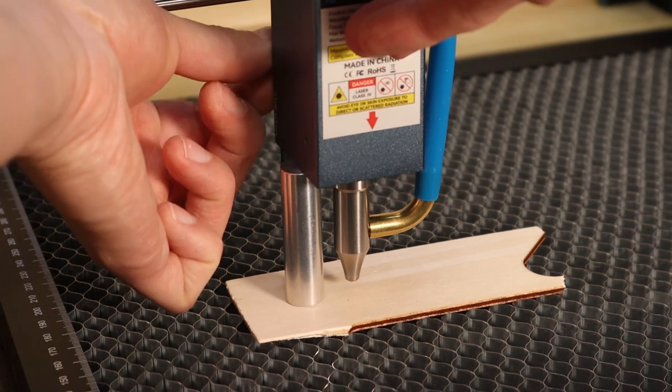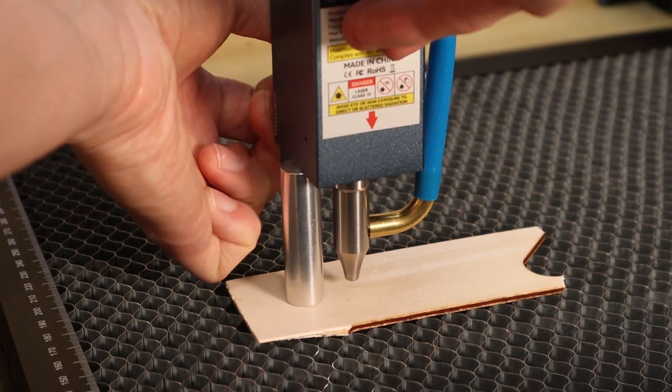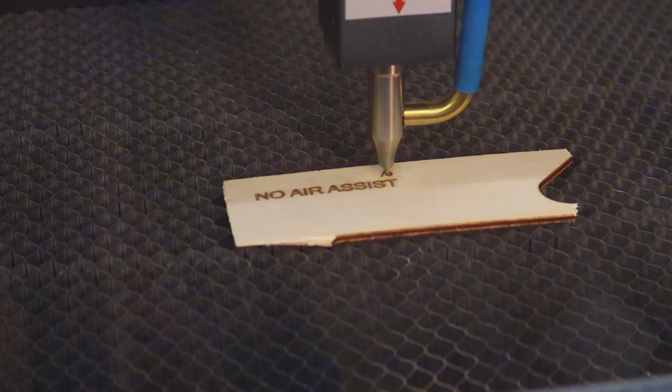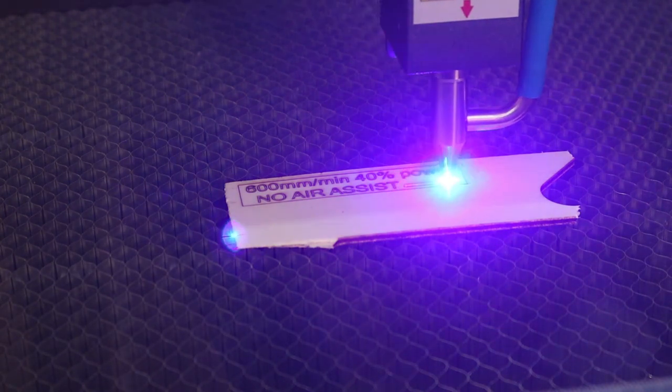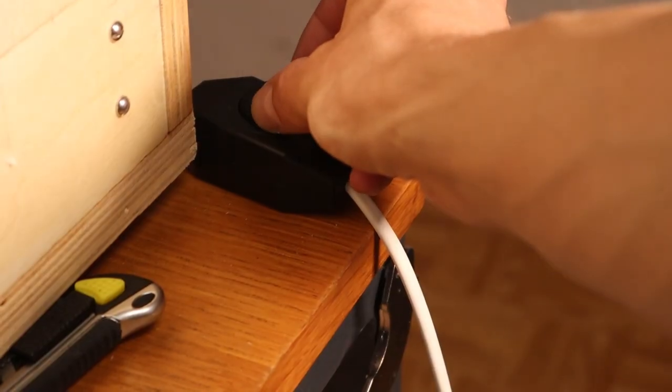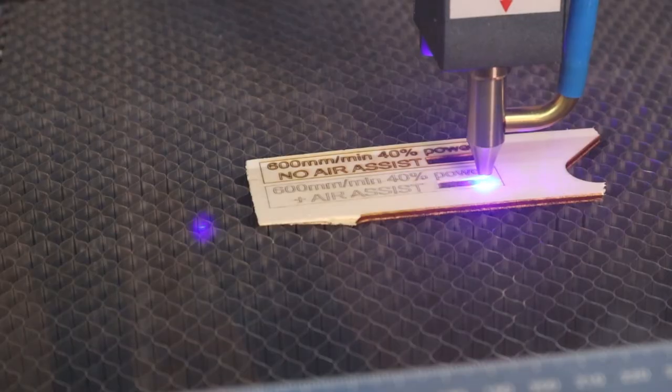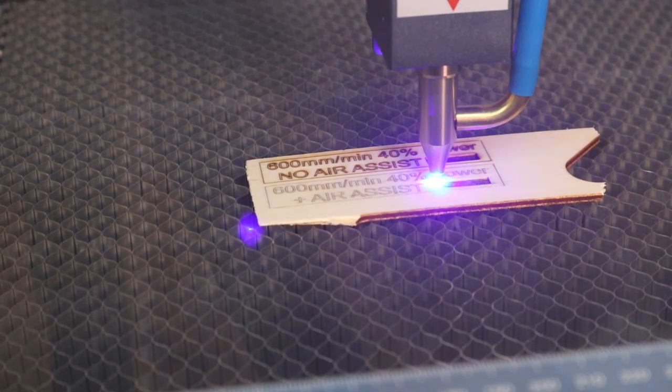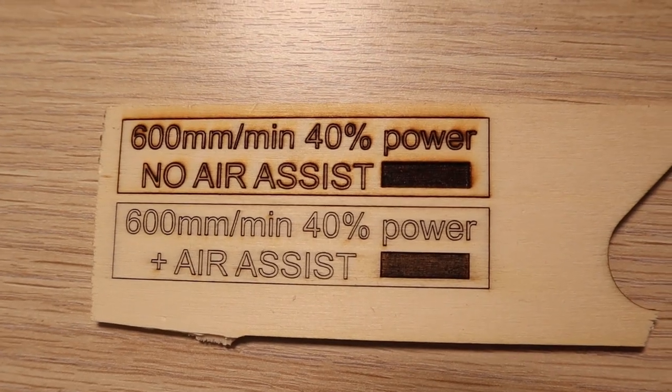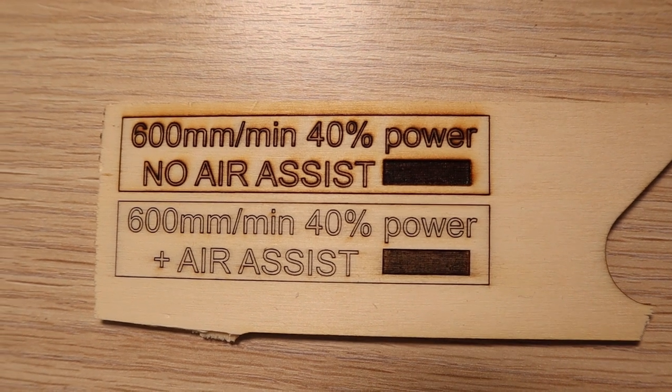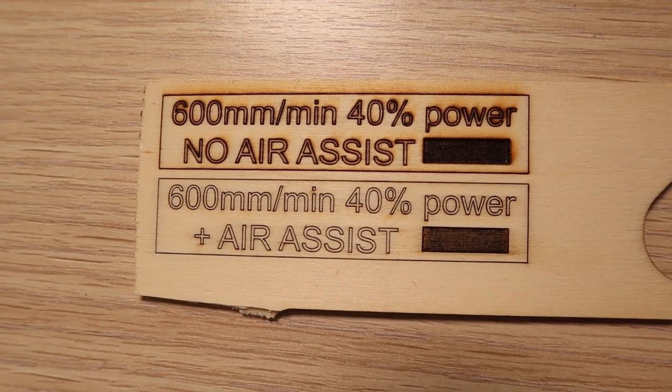The second benefit a honeycomb brings are much cleaner engravings. I engraved the same thing two times on wood. First with no air assist and then with the air assist turned on. With the air assist, the engravings produce less smoke stains and become much darker with more contrast.